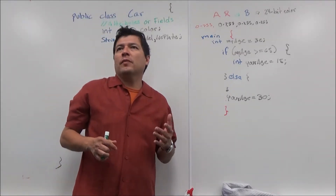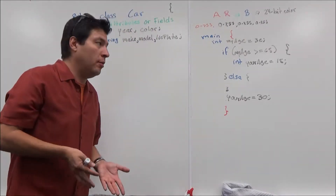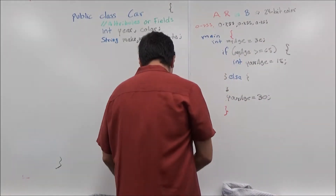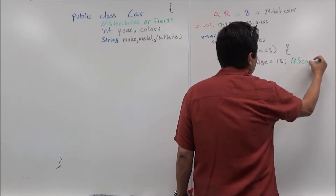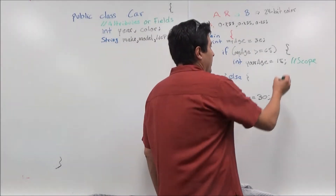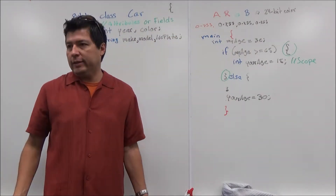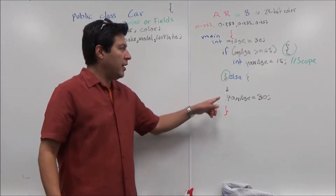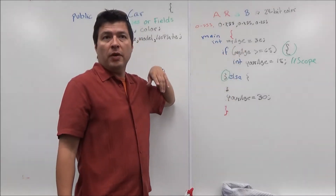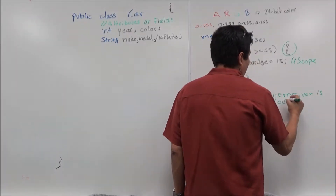There's something called — when I say the variable being alive inside a set of curly brackets — the proper term is the scope of the variable. The scope of a variable is: when is it accessible? It's accessible within the curly brackets it was declared in, and then any inner curly brackets. So this variable is not accessible because it's outside those curly brackets — we say this is an error because the variable is out of scope.